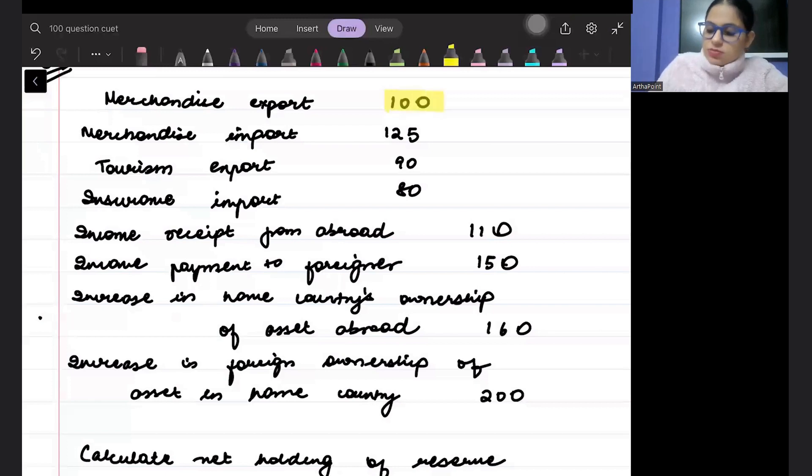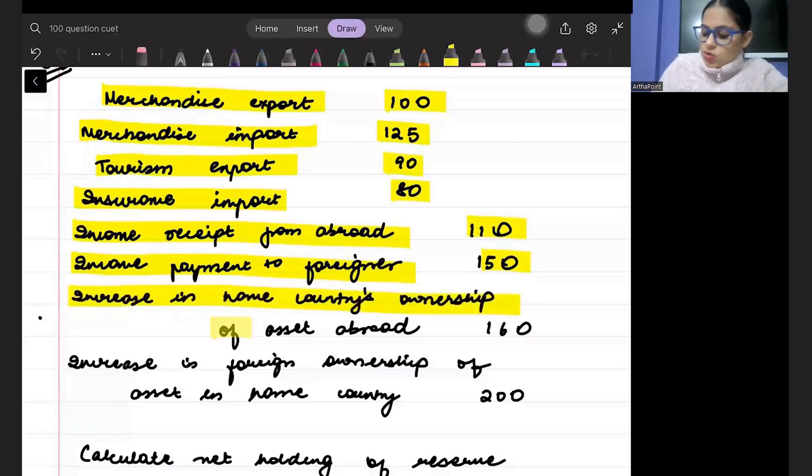You are given the value of export: merchandise export, merchandise import, tourism export, insurance import, income receipt from abroad, income payment to foreigners, increase in home country's ownership of asset abroad, increase in foreign ownership of asset in home country.